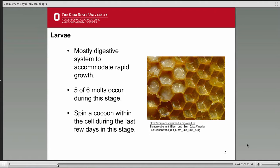Queens spend the shortest amount of time in the uncapped larval stage, about three to five days, while drones spend four to seven days as uncapped larva. Workers are in between there at about five to six days. The capped pre-pupal time period is three to four days for queens, three to five for workers, and four to six for drones.